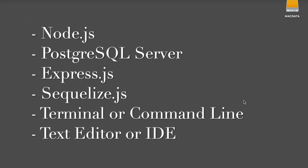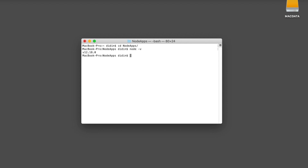The following tools, frameworks, and modules are required for this tutorial: Node.js, PostgreSQL Server, Express.js, Sequelize.js, a terminal or command line, and a text editor or IDE. We assume you have already installed PostgreSQL Server on your machine or a remote server, and that you have installed Node.js and can run Node, NPM, or Yarn commands in your terminal. Check their versions by typing the appropriate commands in your terminal.